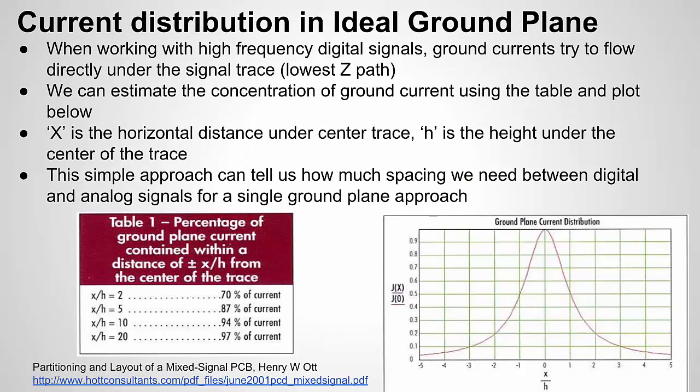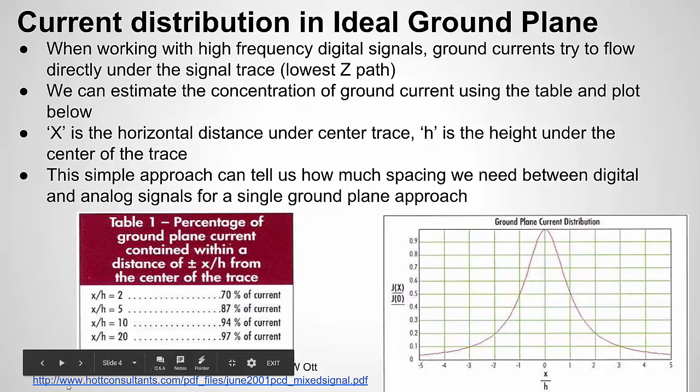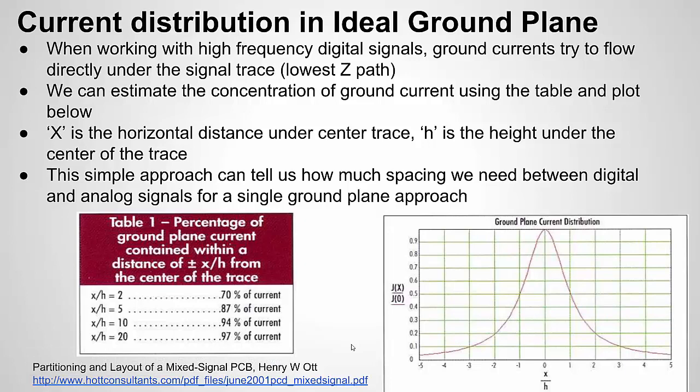To plan our zones, we need to know how much area in a ground plane the return current for a high-speed digital signal will take up. Before I get into that, I want to credit Henry W. Ott — there's a link in the video description to his article. When working with high-frequency digital signals, ground currents tend to flow directly under the forward trace, because for higher frequencies this is the path of lowest impedance and, more importantly, lowest inductance. Think of a differential signal — the ground plane is almost the other end of that signal.